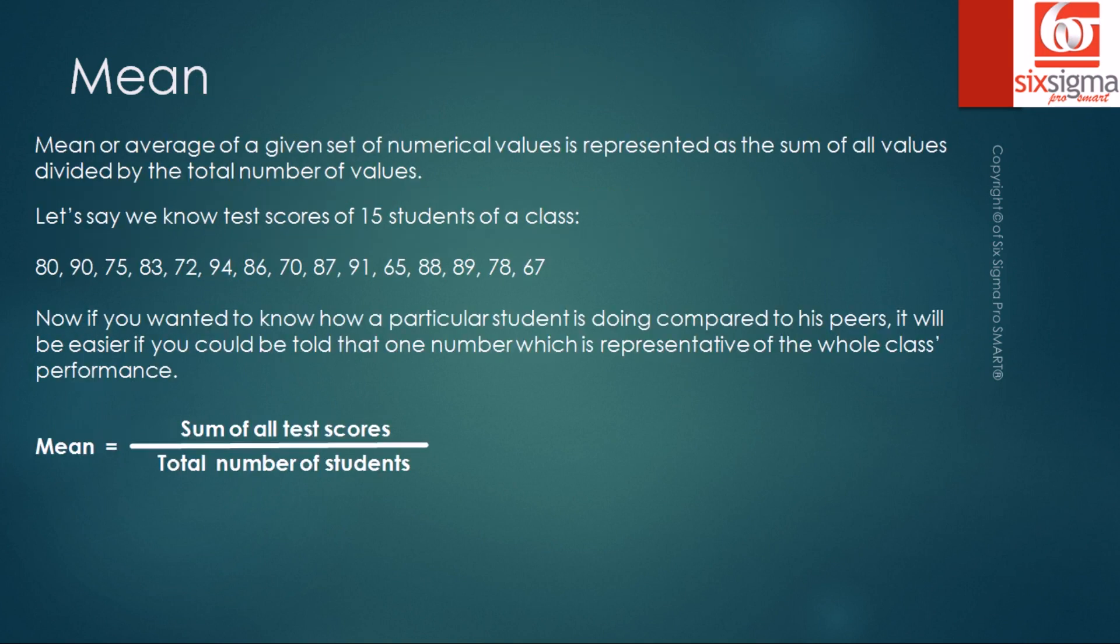Let's talk about the mean or the average, which is the most popular measure of central tendency. Mean or average of a given set of numerical values is represented as the sum of all the values divided by the total number of values.